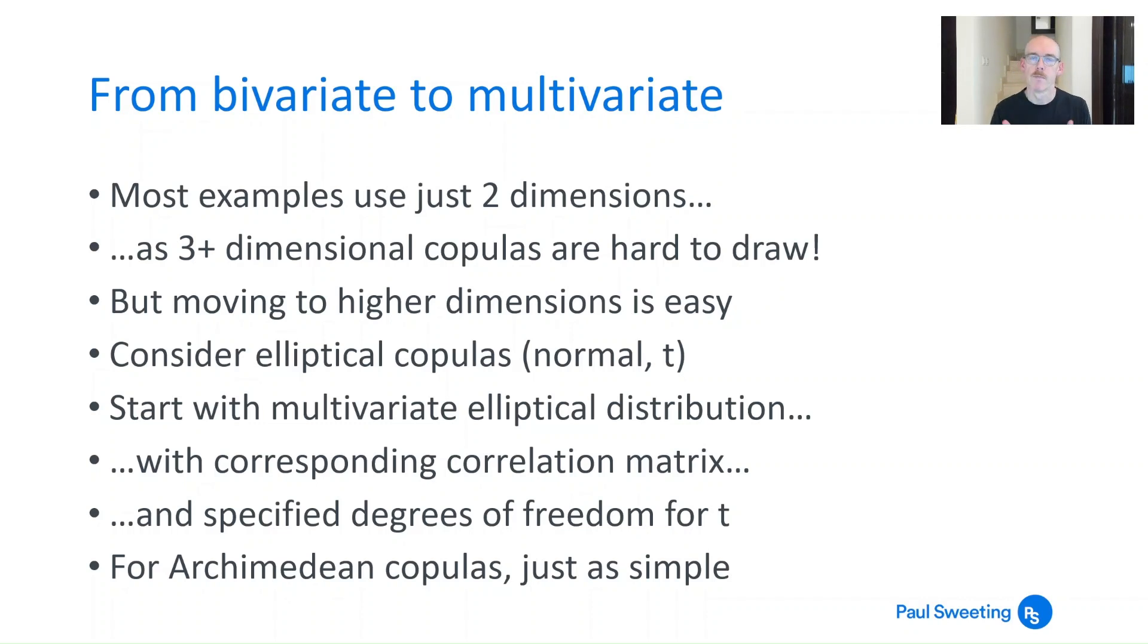So bivariate is fairly straightforward, multivariate is pretty similar, you're just going up from—most of the reasons that you start with a bivariate distribution is it's the most basic type of copula and also it's easier to draw a two-dimensional copula. Three-dimensional copulas and higher are pretty hard to draw and even visualize but if you can understand what's going on with two dimensions then moving to three dimensions it should be fairly straightforward.